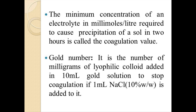We are also going to define coagulation value and gold number. The minimum concentration of an electrolyte in millimoles per litre required to cause precipitation of a salt in two hours is known as the coagulation value. The gold number is the number of milligrams of lyophilic colloid added to 10 ml of gold solution to stop coagulation if 1 ml of 10% sodium chloride is added to it.